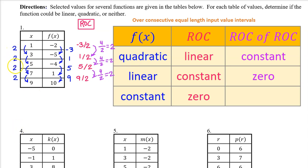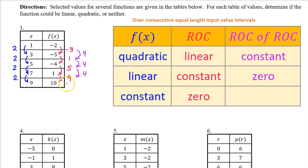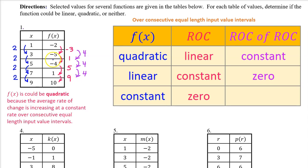When you have consecutive equal-length input value intervals, you don't have to show all this work. You can do a shortcut — we can get all the information we need from the output values and see that the rate of change is increasing at a constant rate without actually calculating the rate of change. If asked to justify our answer, we would say that f(x) could be quadratic because the average rate of change is increasing at a constant rate over consecutive equal-length input value intervals.